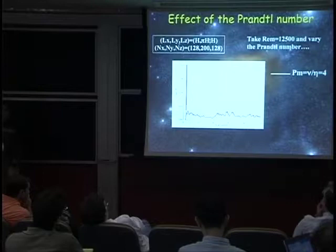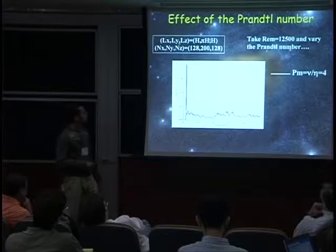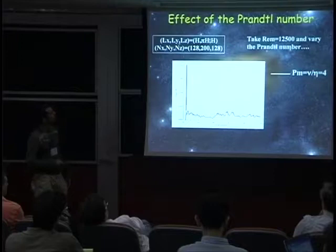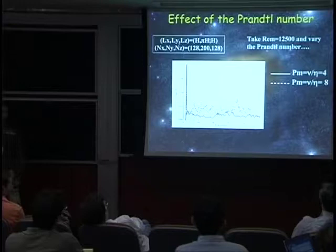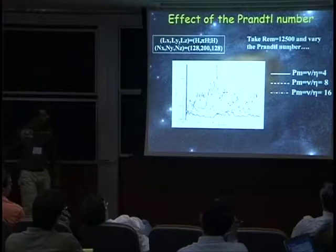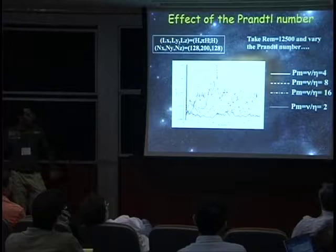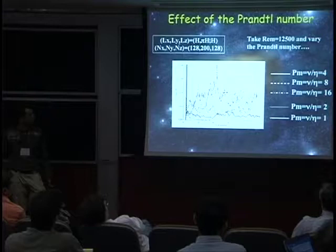Now you can explore parameter space. First, fixing the magnetic Reynolds number — in other words the resistivity — and increasing the viscosity. For the time history of alpha, you get 10^-2 for the baseline case. If you double the viscosity you increase the transport. And if you decrease the Prandtl number, turbulence is not sustained after 90 orbits — the same is true for PM equals 1. Alpha increases with the Prandtl number.